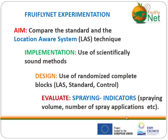The indicators used for comparison included the spraying volume, the number of spraying applications, the number of trees sprayed, and how locally the spraying was applied in the different plots. The aim was to show that the system could improve pest control with lower adverse effects on the environment and higher efficacy compared to conventional spraying.